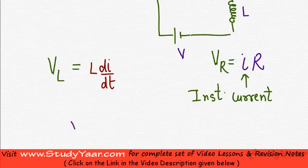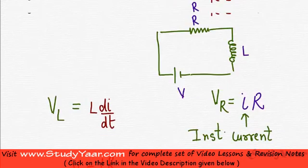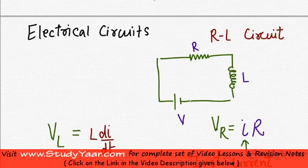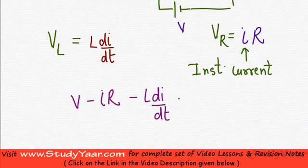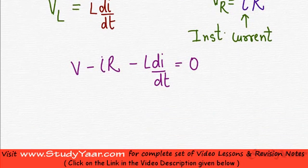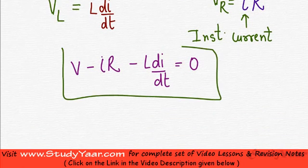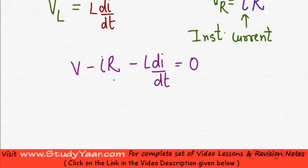Therefore, your total voltage drop in this loop is V minus iR, which is the voltage drop across resistor, minus L di by dt, which is the voltage drop across inductor, equals 0. This is the differential equation that I have. Solving this would give me the relationship between current and time.